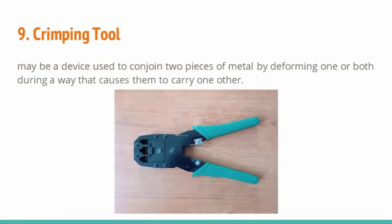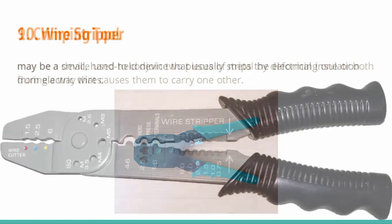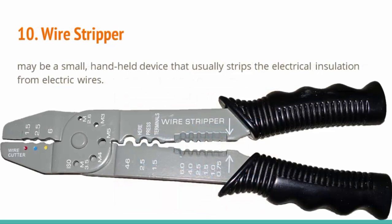Number 9: Crimping tool — a device used to conjoin two pieces of metal by deforming one or both in a way that causes them to hold one another. Number 10: Wire stripper — a small handheld device that strips the electrical insulation from electric wires.